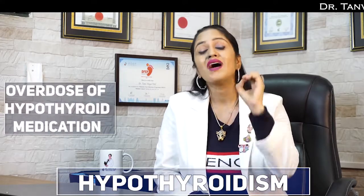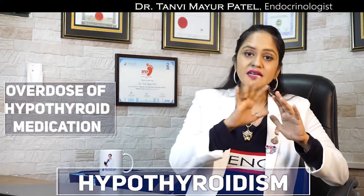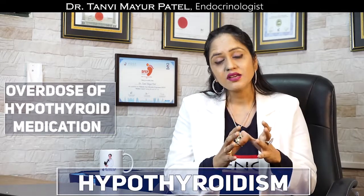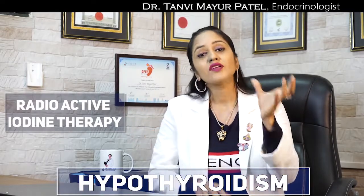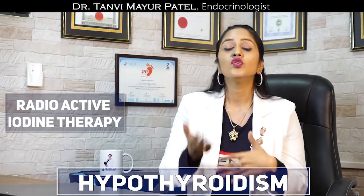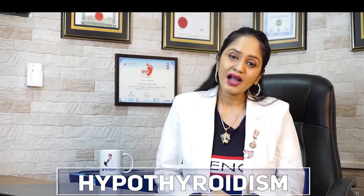Hypothyroidism can also happen if you are taking an overdose of hyperthyroid medication. Hyperthyroidism is altogether a different disease, and if for any reason you are taking dosage of hyperthyroid medications in excess, all this overdose can give you hypothyroidism. To treat hyperthyroidism many people take radioactive iodine therapy, and after you undergo that therapy, again you have a high chance of developing hypothyroidism. Also, due to any reason if your thyroid gland is removed by surgery, then you are also going to develop hypothyroidism.